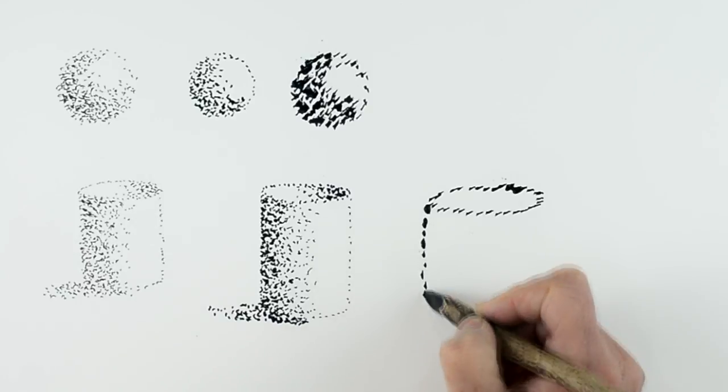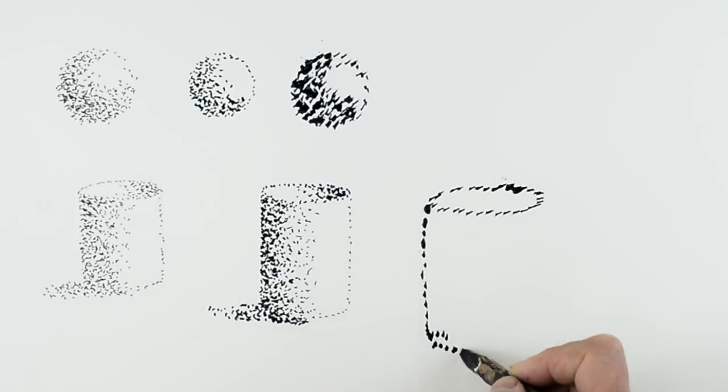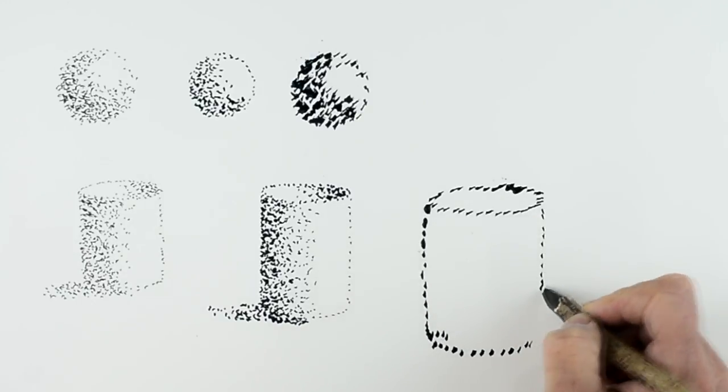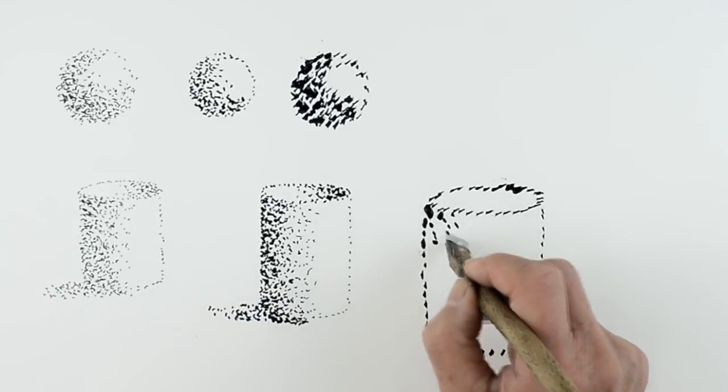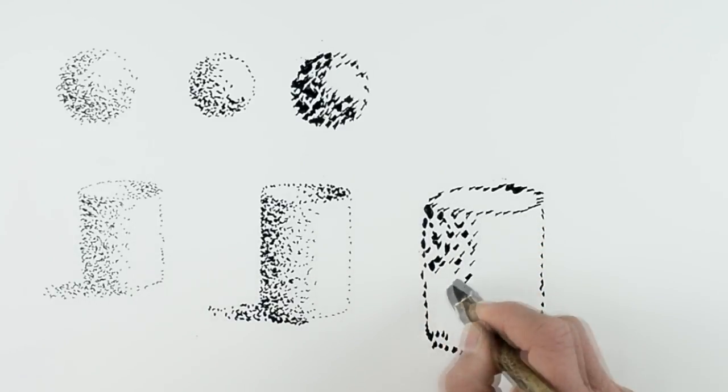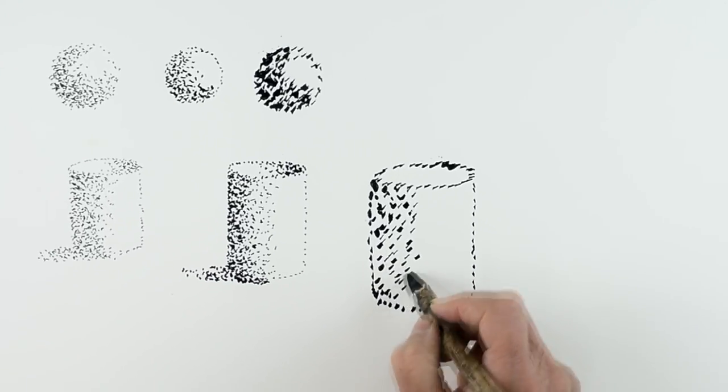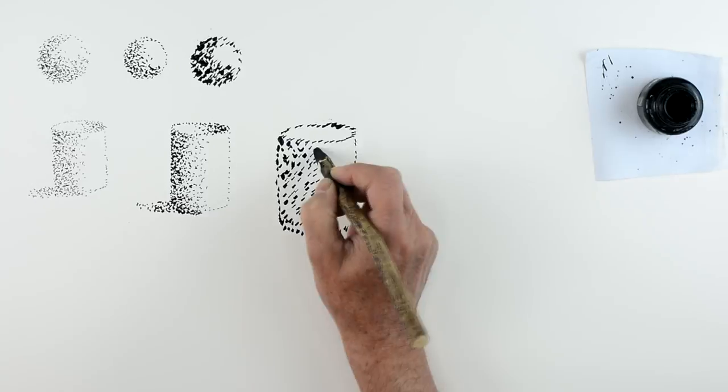The same thing will happen with this one, because the dip pen is producing much darker, bolder, stronger outlines and more darker dots. You can see it makes the object look closer to you. Also size brings the object closer to you as well.